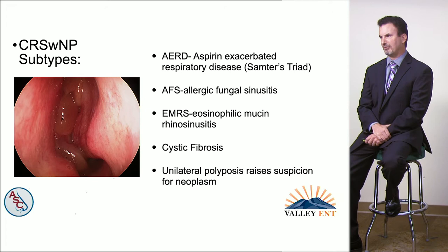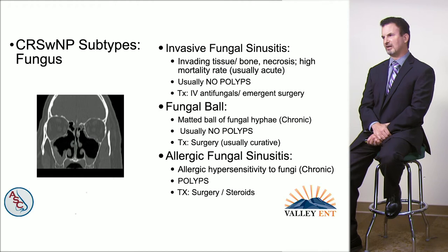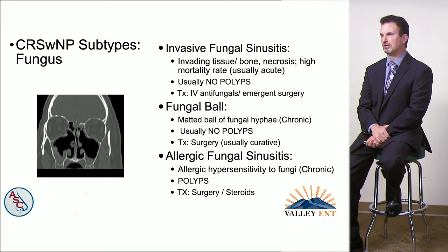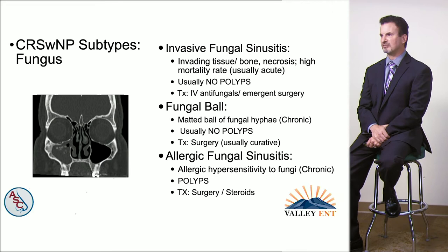There is considerable confusion when discussing fungal sinusitis. There are three types. The first is invasive fungal sinusitis — an infection usually in an immunocompromised patient where the fungus invades tissue and bone, resulting in necrosis and a high mortality rate. Emergent surgery is often needed along with IV antifungal therapy. This is a true acute infection with no polyps.